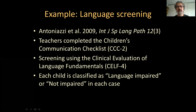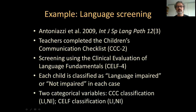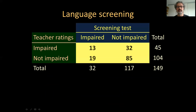Each child is classified as either language impaired or non-impaired by each of the two instruments, so we have two categorical variables: a checklist classification as language impaired or non-impaired, and a clinical classification as language impaired or non-impaired. These are the numbers of children that were classified in each category according to teacher ratings down the rows and according to the clinical evaluation across the columns.